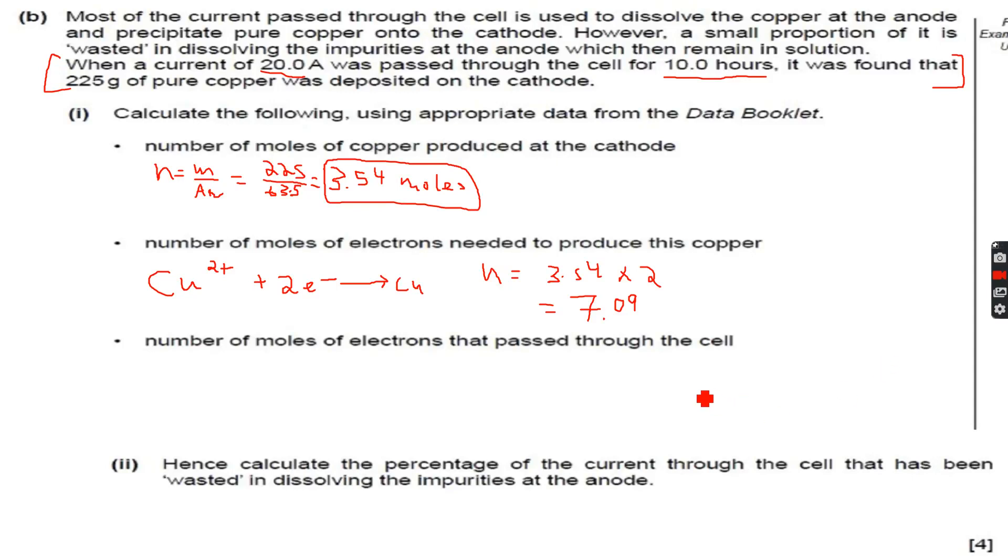The number of moles of electrons is 7.09. Now the third part of the question: number of moles of electrons that passed through the cell.